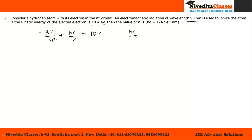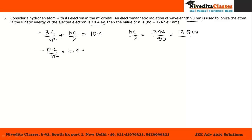hc divided by lambda equals 1242 divided by 90, which works out to 13.8 eV. Putting this value in, we have minus 13.6 over n square equals 10.4 minus 13.8, which equals minus 3.4.